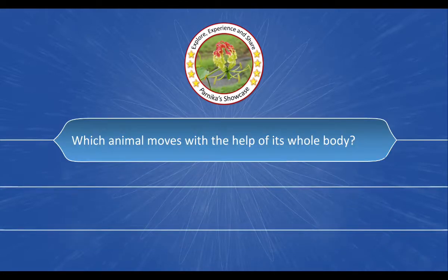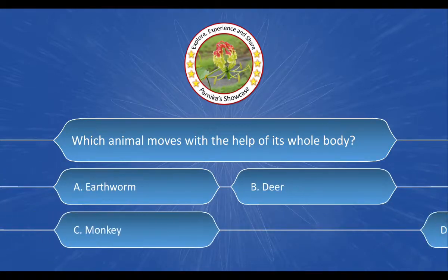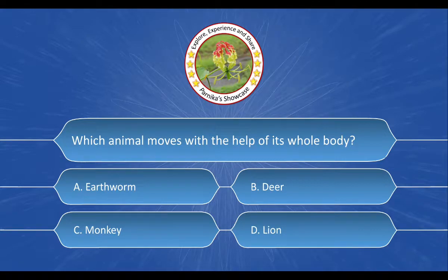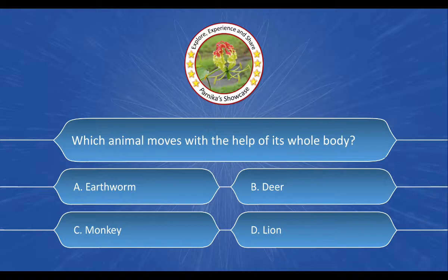Next question: which animal moves with the help of its whole body? The options are: a) earthworm, b) deer, c) monkey, d) lion. The correct answer is option a) earthworm.